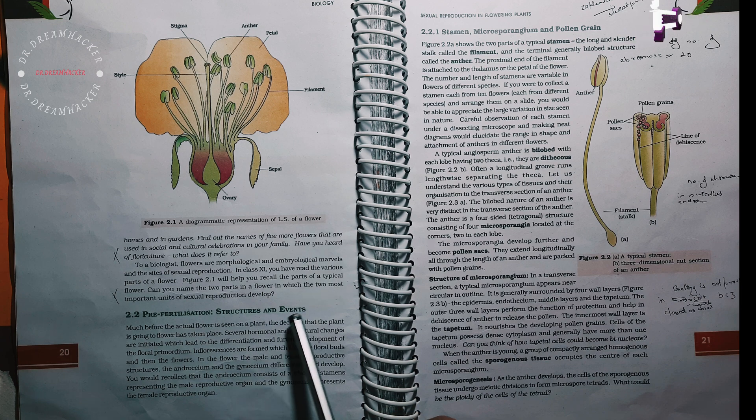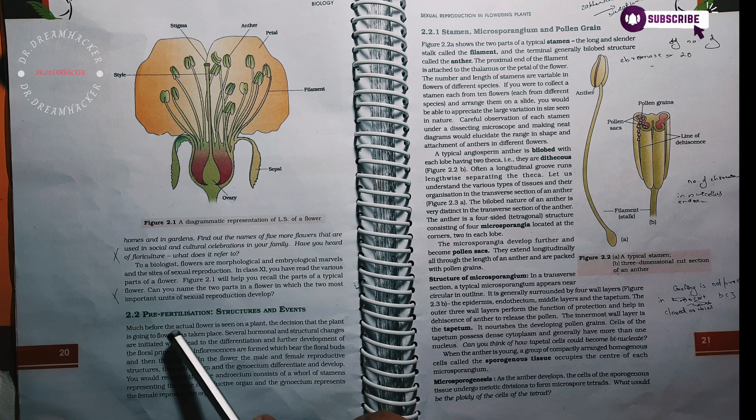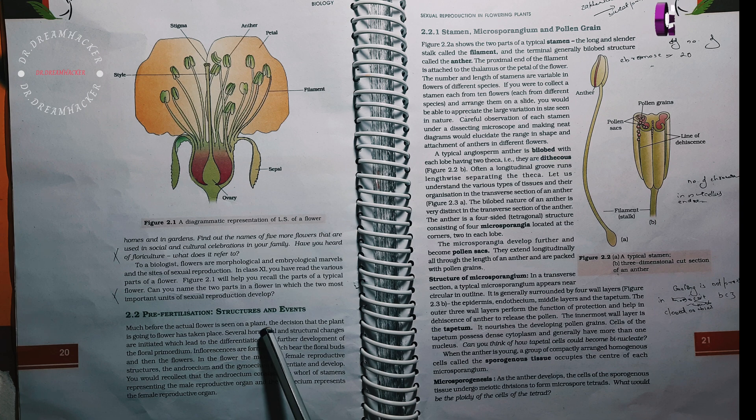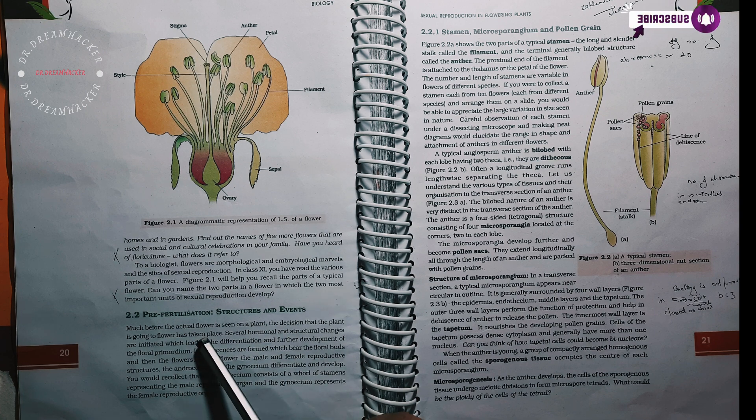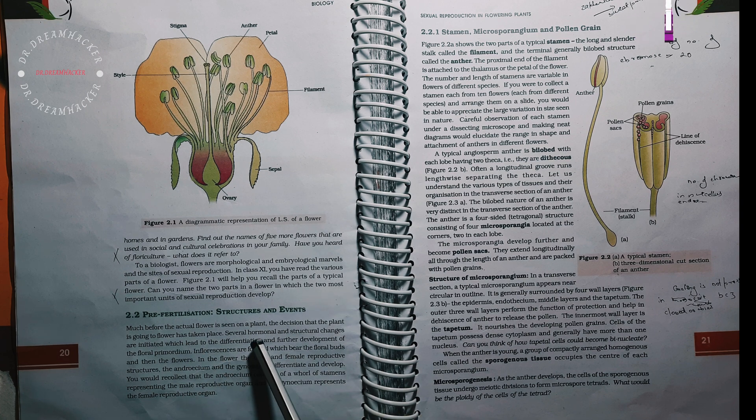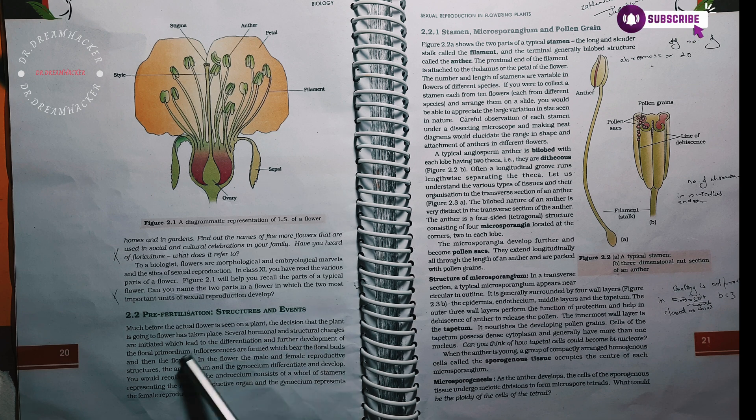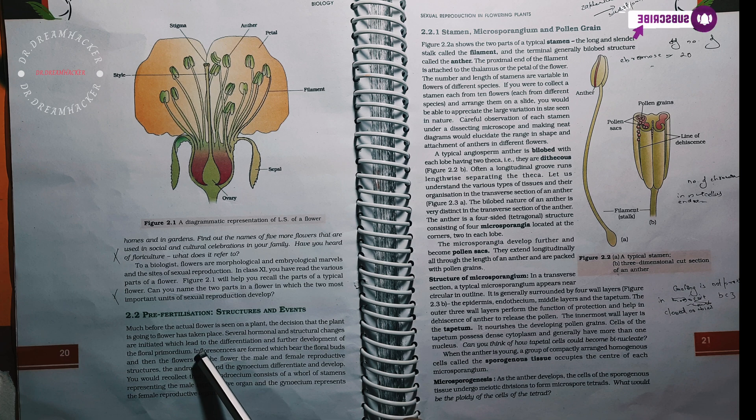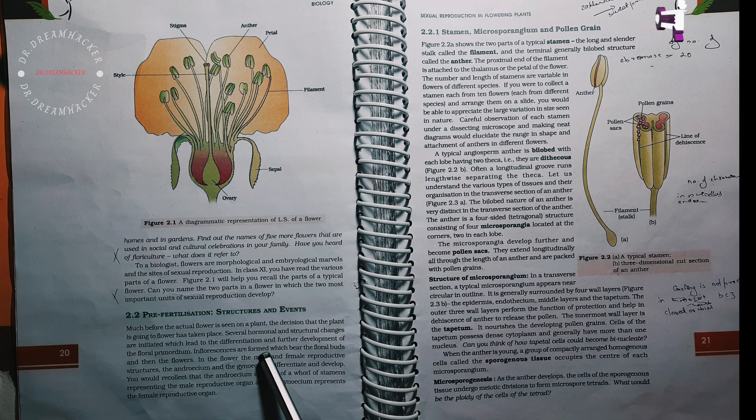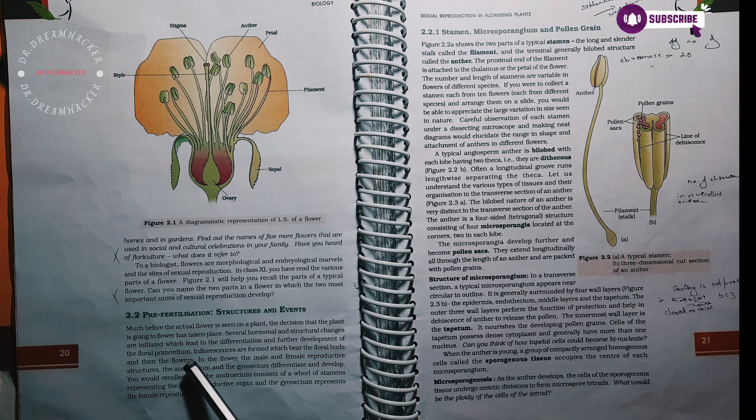Pre-fertilization structures and events. Much before the actual flower is seen on a plant, the decision that the plant is going to flower has taken place. Several hormonal and structural changes are initiated which lead to the differentiation and further development of the floral primordium. Inflorescences are formed which bear the floral buds and then the flowers.